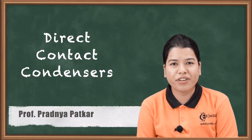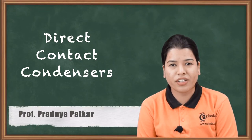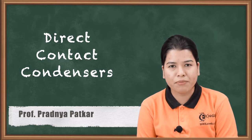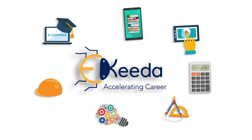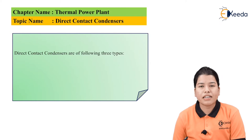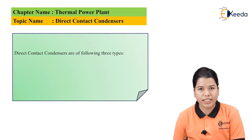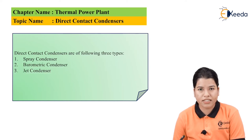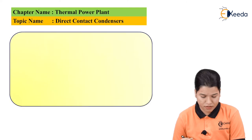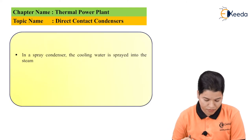In previous videos we studied the need of the condenser and the various types of condensers. In this video we are going to study one such type: the direct contact condenser. Direct contact condensers are basically of three types: first is spray condenser, second is barometric condenser, and third is jet condenser. Let us study these condensers in detail.